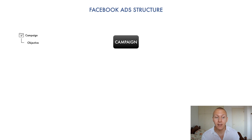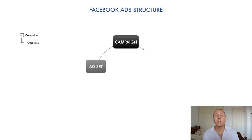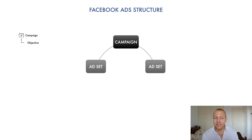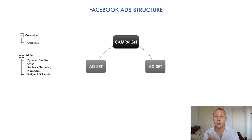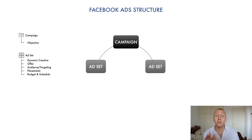So first we go to the campaign and set our objective — that's the only thing we really need to set there. Next up we go to the ad set level. In the ad set we can set things such as who the audience is going to be, where our ad is actually going to show up — whether on Facebook, mobiles only, or Instagram — and we also set the budget for that ad set.